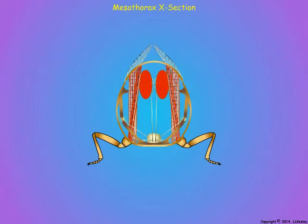Needless to say, besides the indirect flight muscles, there are other wing-related muscles in the thorax of insects that control wing twisting and for folding the wings over the abdomen, as shown here. However, only those muscles that are directly related to starting the flight muscles will be discussed.